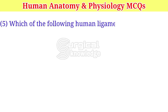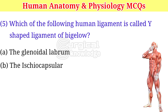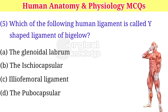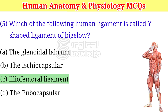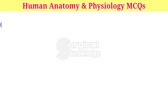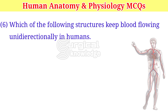Which of the following human ligament is called the Y-shaped ligament of Bigelow? A. The glenoidal labrum. B. The ischiocapsular. C. Iliofemoral ligament. D. The pubocapsular. Right answer is iliofemoral ligament.